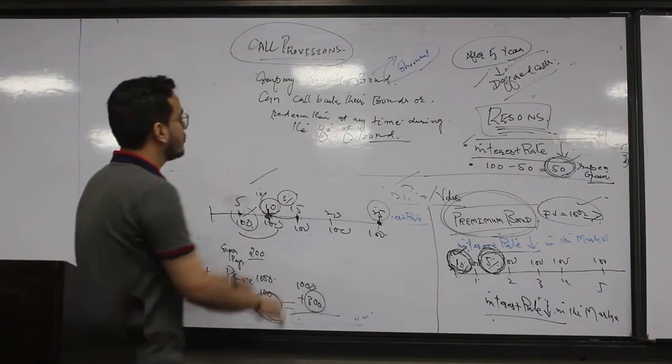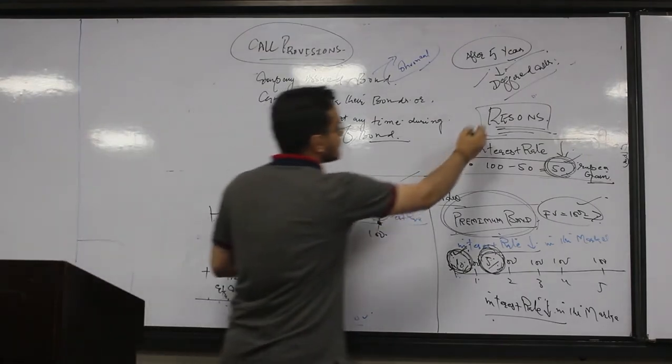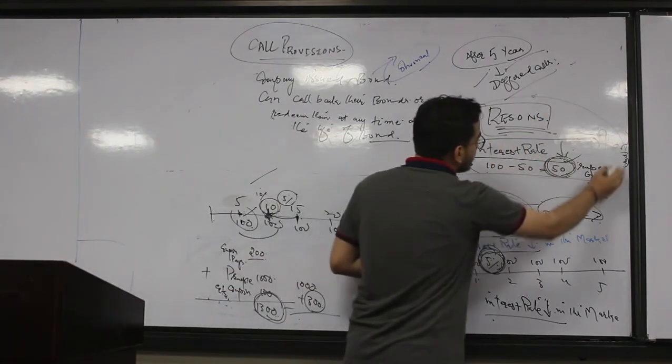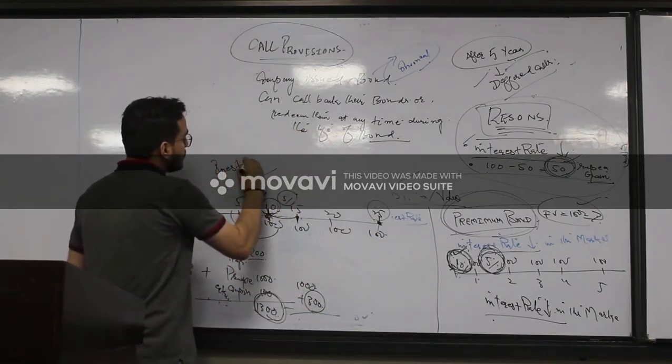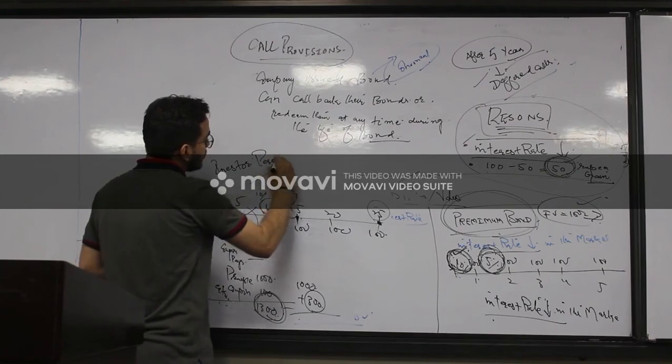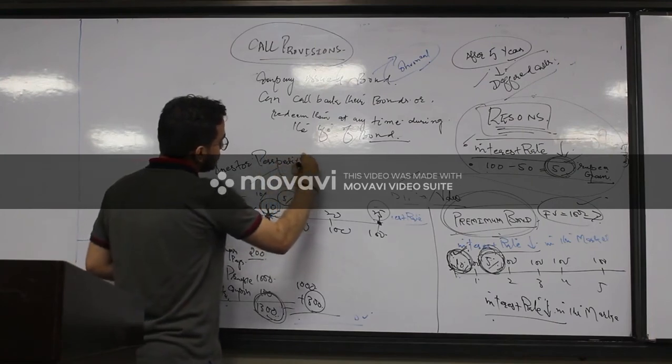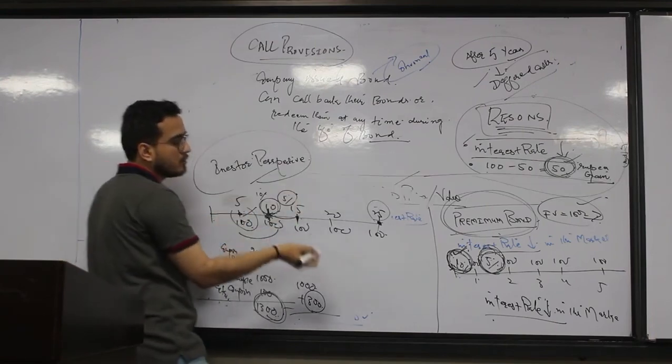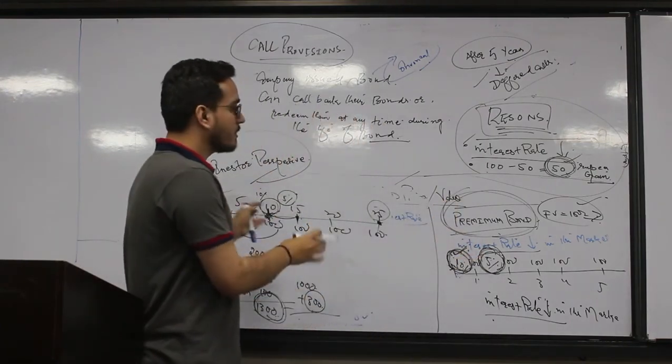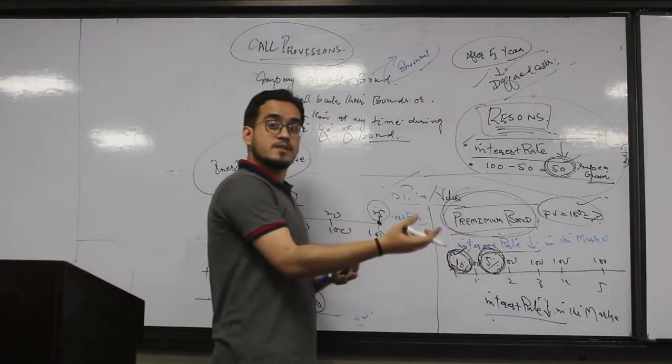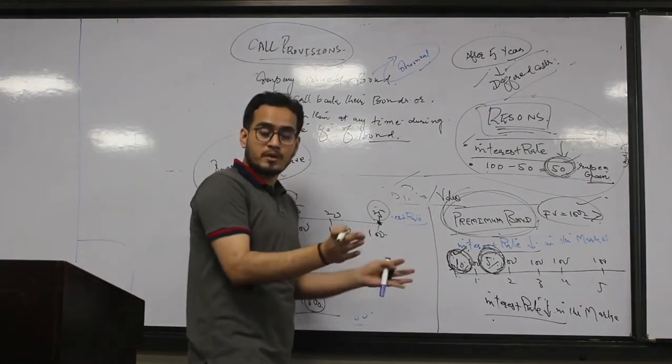So this is how the call provision works. This is why companies call their bonds, what is the benefit from the company and from the investor perspective. So this all comes under the category of premium bond. When interest rate changes, how it will impact on your bond price. That's the key.